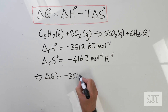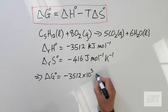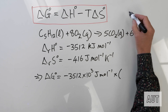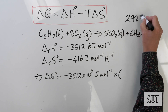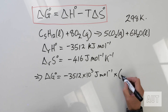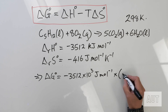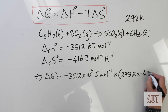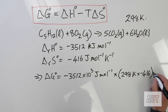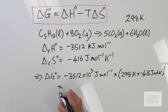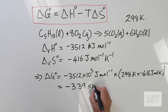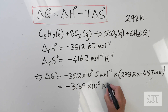So ΔG° equals minus 3512 × 10³ J per mol, minus — and we're doing this at 298 K, 25 degrees — 298 K times ΔS° of minus 416 J per mol per K. Doing the calculation, that comes out at minus 3.39 × 10³ kJ per mole.